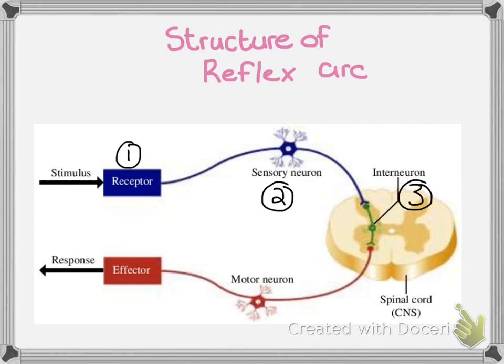From the connector neuron in the spinal cord, where an integrative decision has been made, that response is then sent to a motor neuron, which would be number four. And a response would be carried out by an effector, which we would label as number five. An effector would be some kind of skeletal muscle.